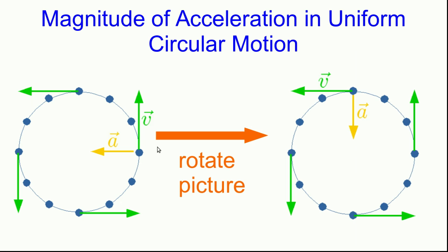At this particular moment, the acceleration is to the left, perpendicular to the velocity, as we've seen. Now think about rotating the picture. Suppose we rotate the picture 90 degrees counterclockwise. So now it looks like this.